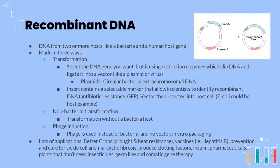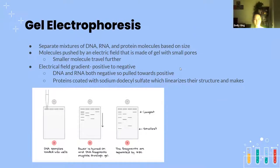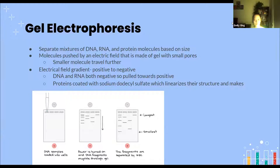Gel electrophoresis is another very important idea in genetics and biotechnology. It separates biomolecules — DNA, RNA, and protein — based on their size. Molecules are pushed by an electric field through a gel with small pores. The electric field runs from positive to negative, and since DNA and RNA are both negatively charged, they start on the negative side and gradually pull towards the positive side.